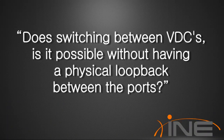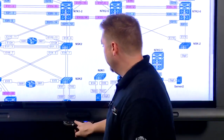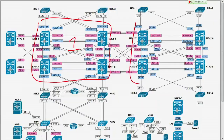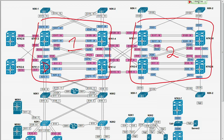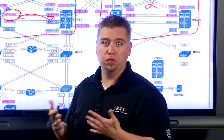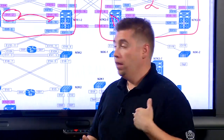There was a question: is switching between VDCs possible without having a physical loopback between the ports? From a management point of view, you don't have to have a physical loopback just for management access. But anytime you want to actually forward packets in the data plane, yes, you do need a physical connection. As we can see in our topology, there are only two physical boxes — physical 7K chassis one and two — each split into four VDCs. The only way to pass packets in the data plane between them is to have essentially a physical loopback, going from the line card back to itself.